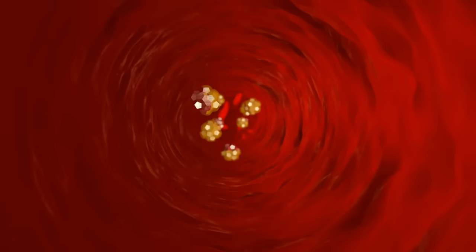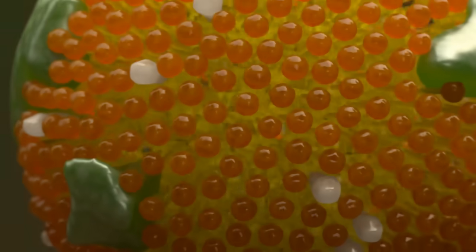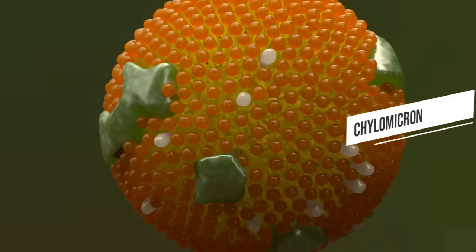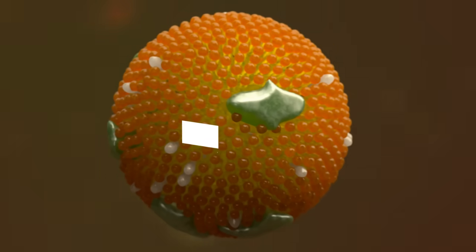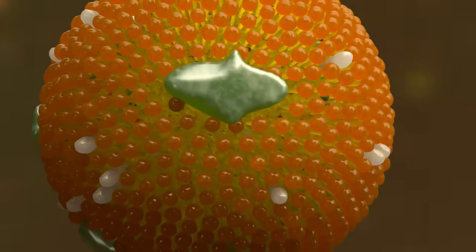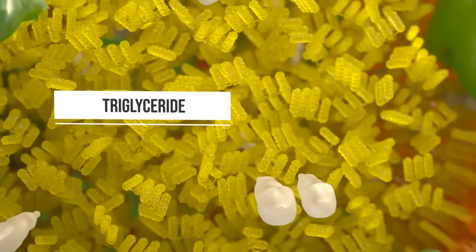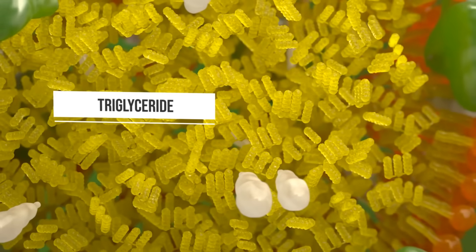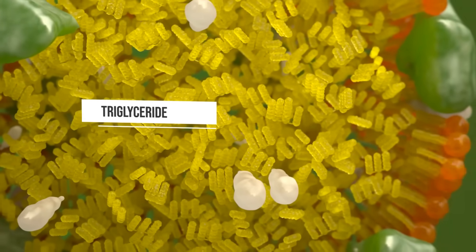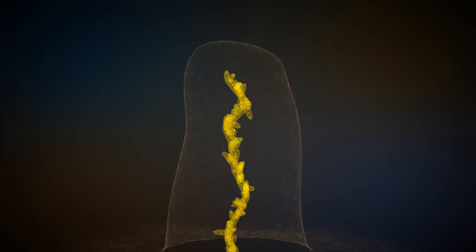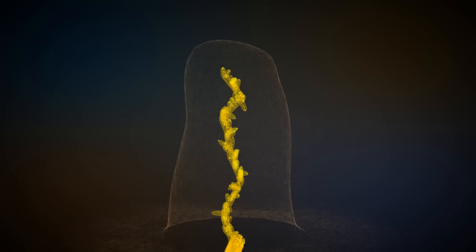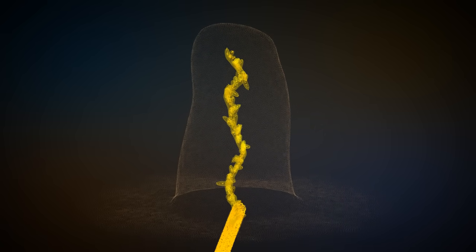Fats are transported by chylomicrons, which are lipoproteins. The triglycerides to be transported are virtually enclosed in the lipoprotein. Chylomicrons and triglycerides are then transported through the lacteal of the villus.